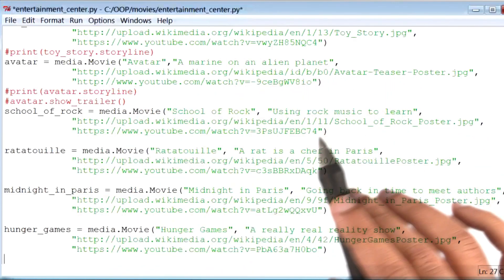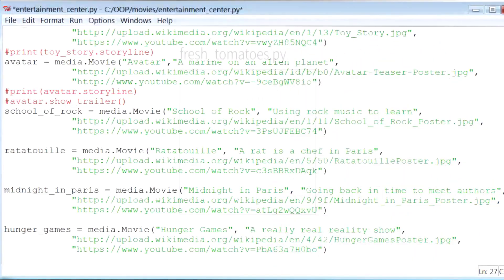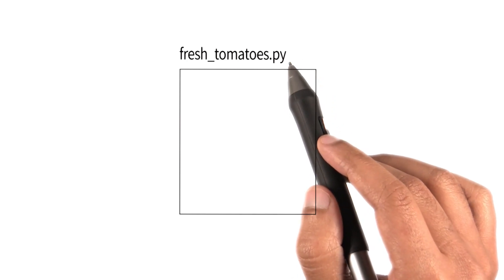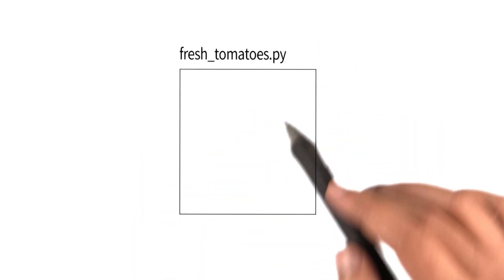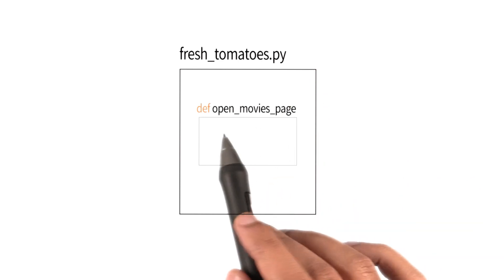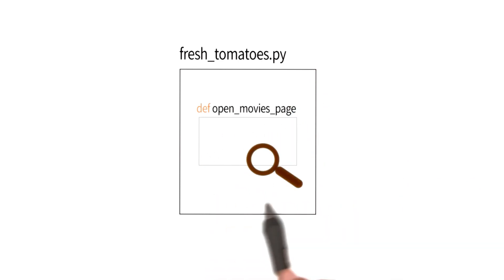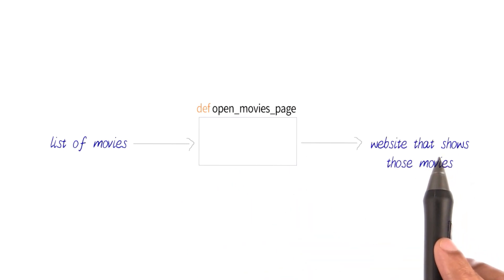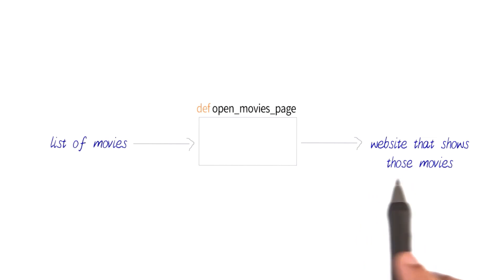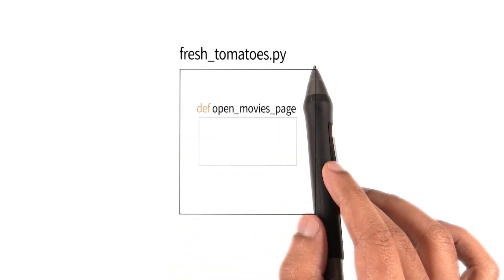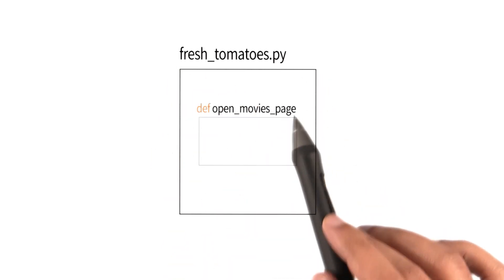To turn this into a movie website, you will need a piece of code that we wrote called freshtomatoes.py. This file is available for you to download in the instructor notes. This file has a function inside it called OpenMoviesPage. What this function does is take in a list of movies as input, and as output it creates and opens an HTML page — a website — that shows the movies you gave it. So what I'm going to do next is use this file freshtomatoes.py and its function OpenMoviesPage inside our code.